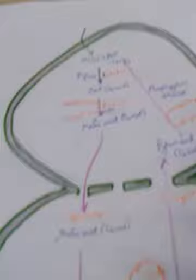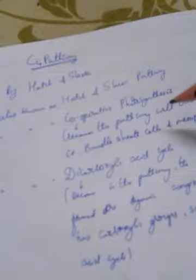Today we will be discussing the C4 cycle. This is also called the Hatch and Slack pathway, as it was first detailed by Hatch and Slack. It is also known as cooperative photosynthesis because the pathway occurs cooperatively with two cell types.